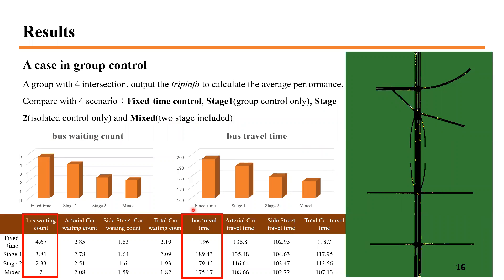The results show a basic improvement with only group control, because group control performs the strategy only once when the bus arrives at the group, ensuring the bus can pass intersections ahead even under complex traffic flow. The mixed two-stage TSP strategy achieves the best performance overall. Only isolated control (stage two) also achieves good performance due to its accurate control every second.